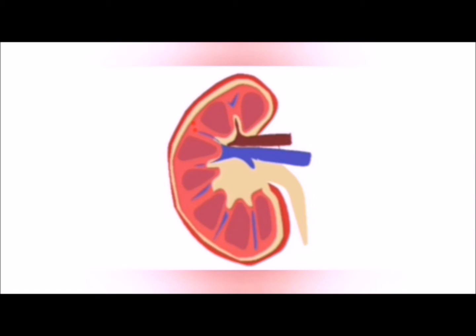One of the nephron's filtering portions, the renal corpuscle, is located in the cortex. The renal tubules pass from the renal cortex to the medulla. A part of the renal cortex and the medullary ray is a collection of renal tubules which drains the urine into one collecting duct. The tip of the medulla helps in emptying the urine through the minor and major calyces and the renal pelvis.